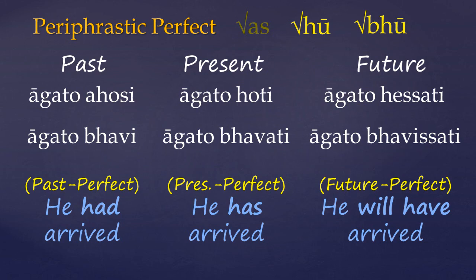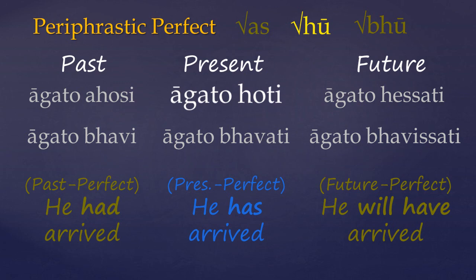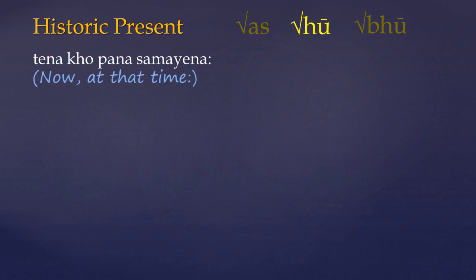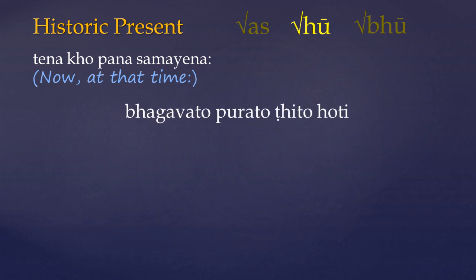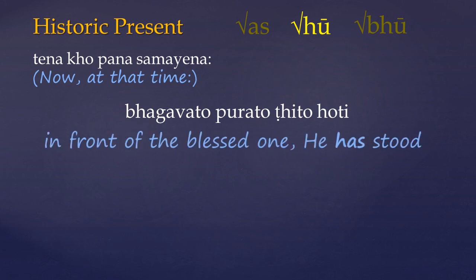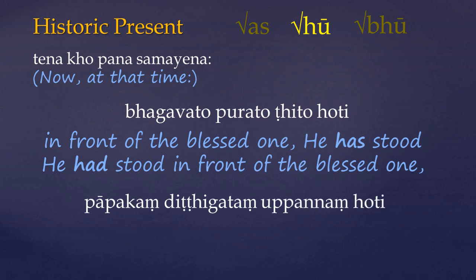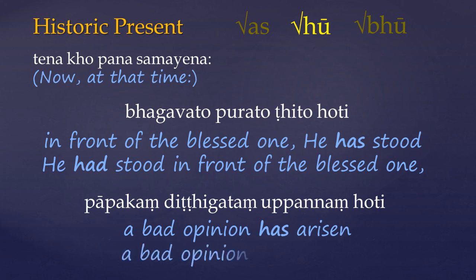Another peculiarity is that the present tense of 'hoti' often, though not always, refers to what is called the historic present. This is especially true when it's accompanied by an adverb of time, such as in the idiom 'tena kho pana samayena' — 'now at that time' — followed by 'bhagavato purato ṭhito hoti', which literally means 'in front of the Blessed One, he has stood'. But because of the adverbs casting this into past time, we would say: 'on that occasion, he had stood in front of the Blessed One.' Likewise, 'pāpakaṃ diṭṭhigataṃ uppannaṃ hoti' means 'a bad opinion has arisen', but in combination with the adverbs we would render this: 'on that occasion, a bad opinion had arisen.' So although literally the auxiliary verbs indicate the present time, the adverbs or other linguistic device sets the time period, casting the whole statement or series of statements into past time.